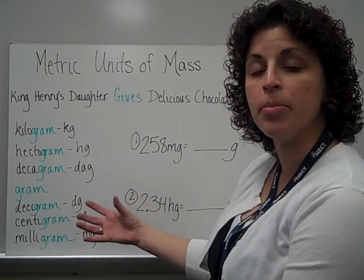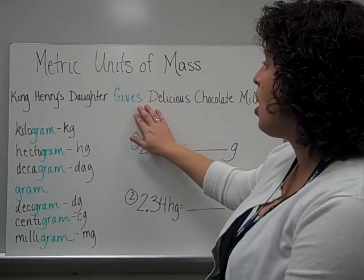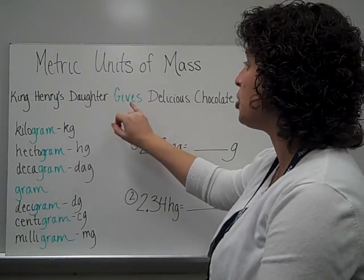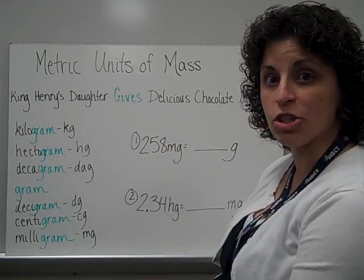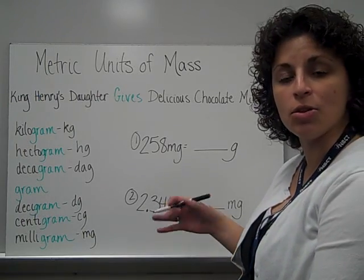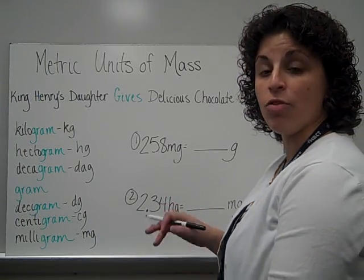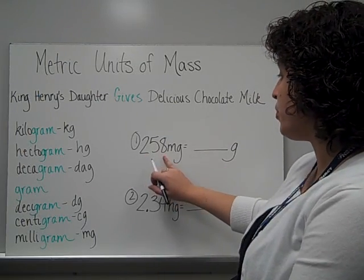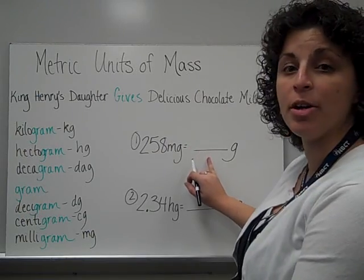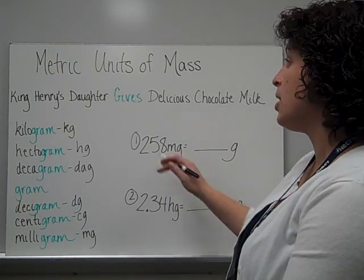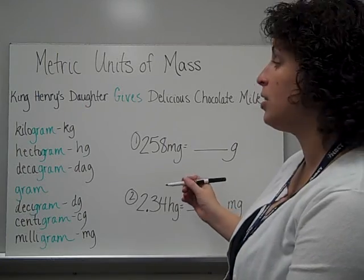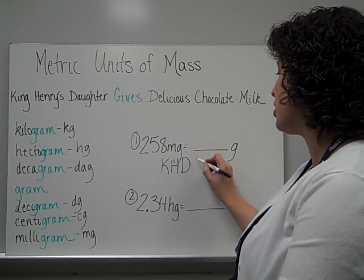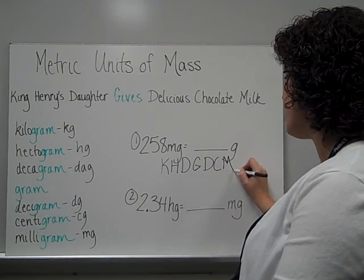Because gram is the building block for each of these units, our phrase changes once again — just the word in the middle. King Henry's daughter gives delicious chocolate milk. And solving these is going to work the same as it has for our other units of measure as well.